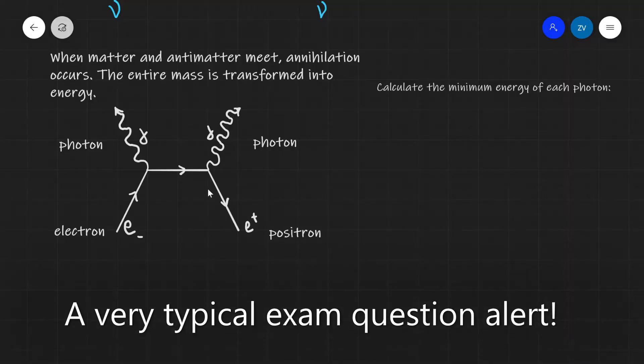Let's have a look at an example of this. Here's an example of a Feynman diagram showing an annihilation event. We have an electron and a positron interacting and the resulting annihilation produces two photons.